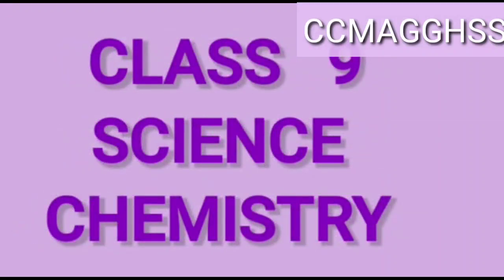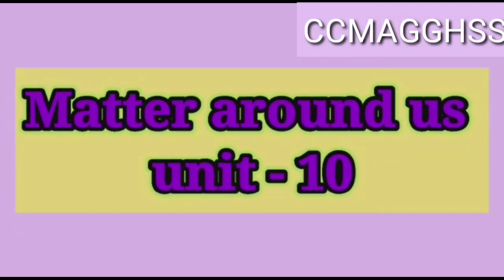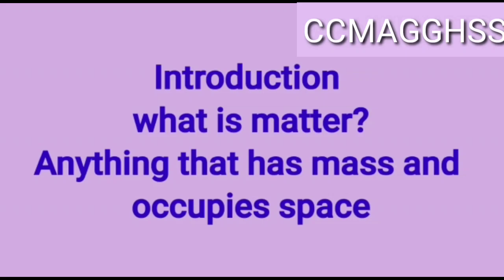Hi students, today we are going to learn about matter around us, unit 10 in chemistry. What is matter? Matter is everything around us — the air we breathe, the food we eat, the pen when we write, clouds, stones, plants, animals, a drop of water, grains — everything is matter. They have two common properties: they have mass and they occupy space. So anything that has mass and occupies space is called matter.